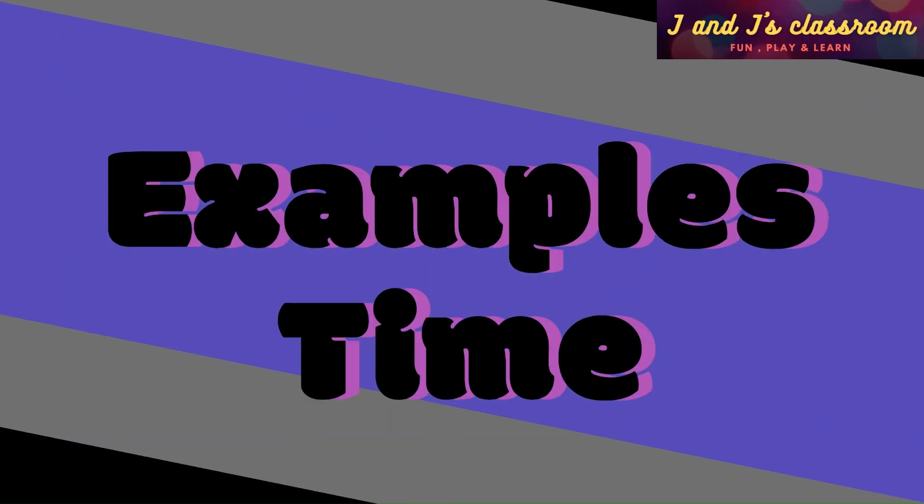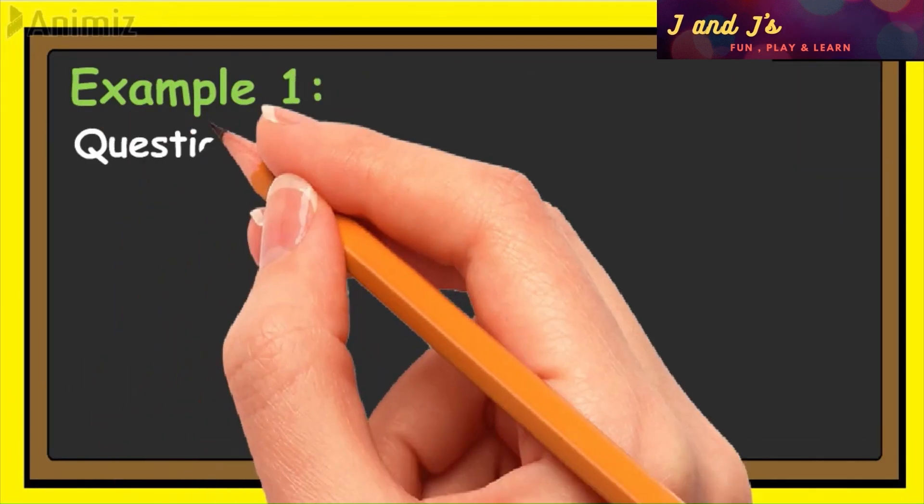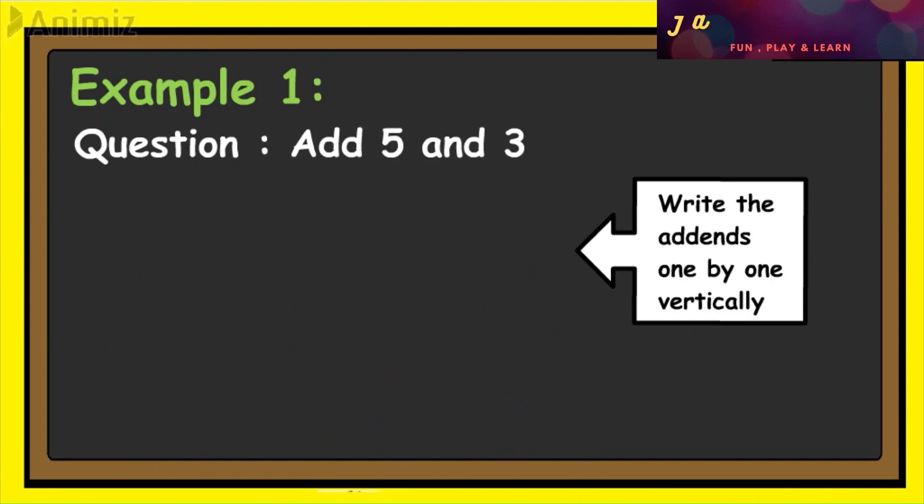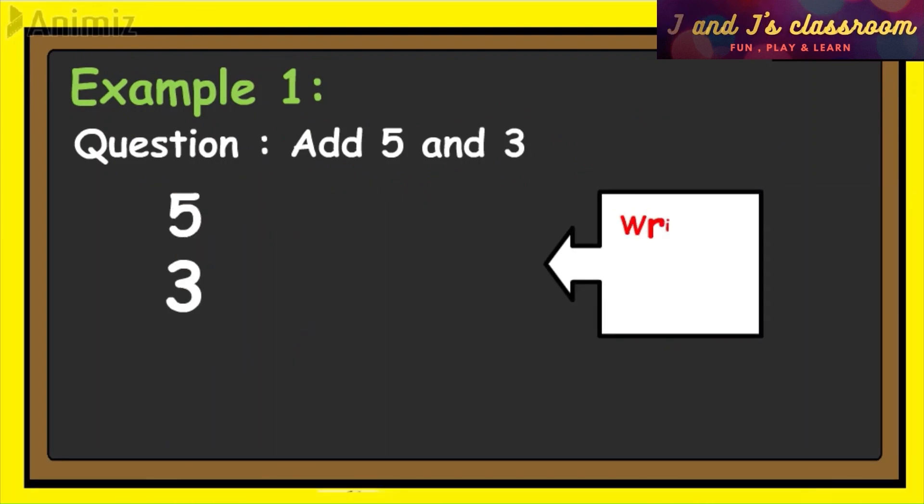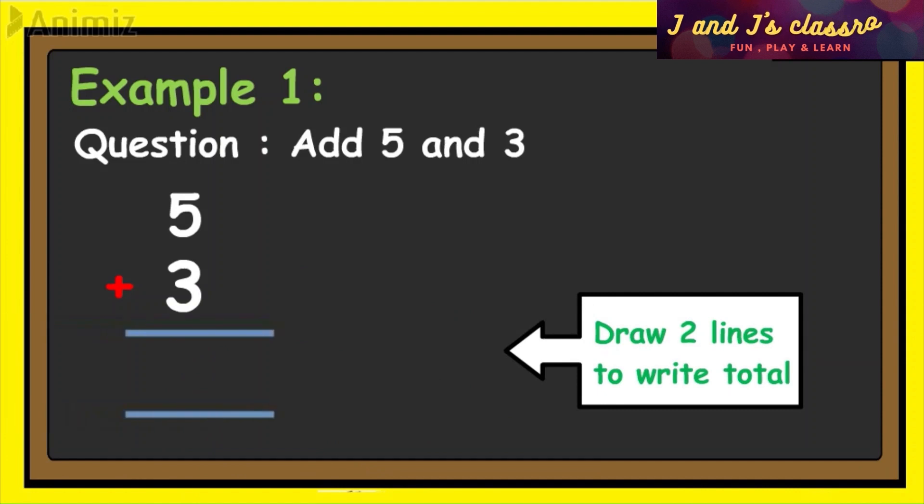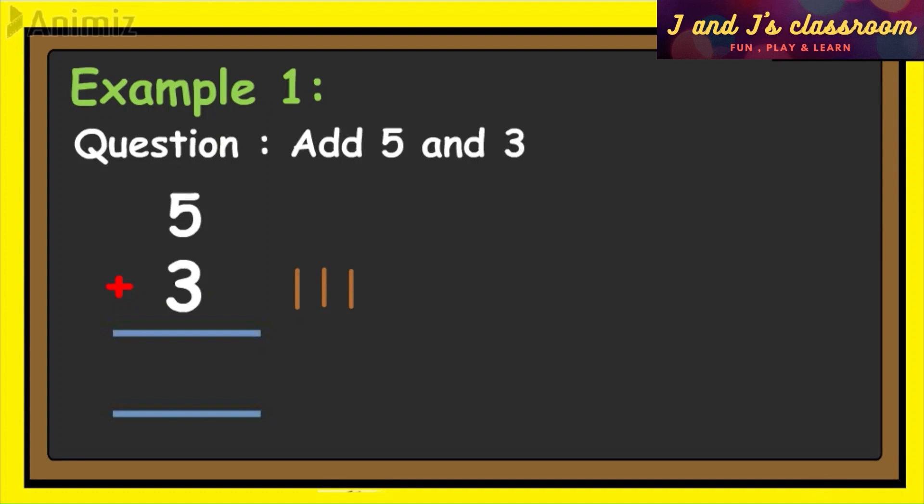It is the right time for examples. Let's start. Example number one: Question, add five and three. Write the addends one by one vertically. Five, three. And write addition symbol. And draw two lines to write total. Draw sticks for second addend values. Three sticks.